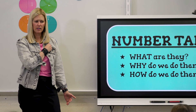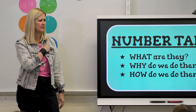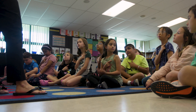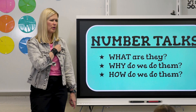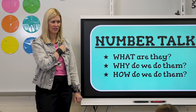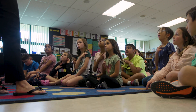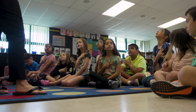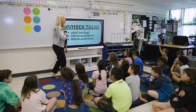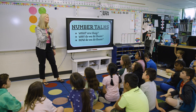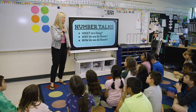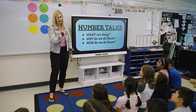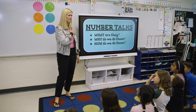Once you get an answer, everybody do this — thumb up right on your chest. This says: I've got an answer, and I have a way to talk about why that answer is what it is. What do you think is going to happen if you have two ways to talk about your answer? You guys catch on quick! If you have three ways, four ways — if you have more than five, we don't put all our fingers up. We just give a small little wiggle, and that says I've got more than five things I could talk about.